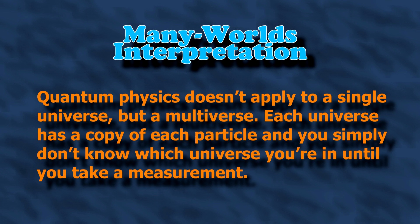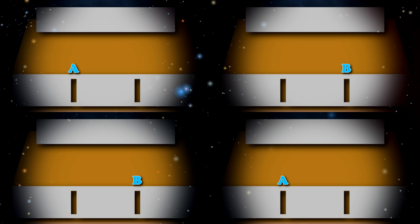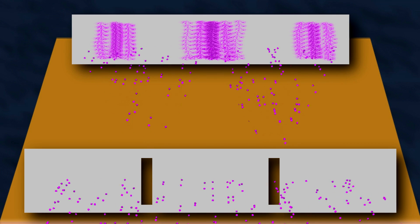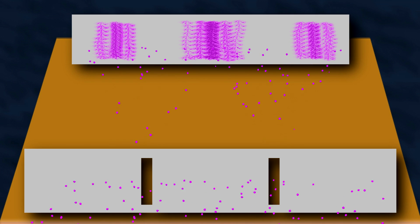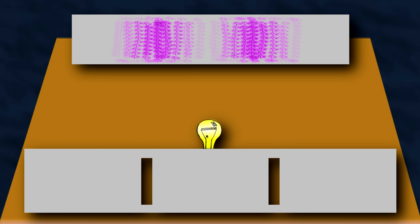The many worlds interpretation: quantum physics doesn't apply to a single universe, but a multiverse. Each universe has a copy of each particle, and you simply don't know which universe you're in until you take a measurement. Let's say you send one electron at the double slit. You may not know which slit it goes through, but half the universes sent it through the left and the other half sent it through the right. If you don't detect which slit it passes through, then it interferes with the particles in the other universes and behaves like a wave. If you do detect which slit it passes through, then it somehow breaks contact with its multiverse copies and behaves like a particle.